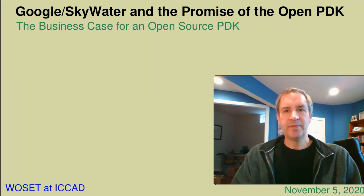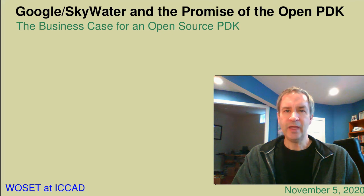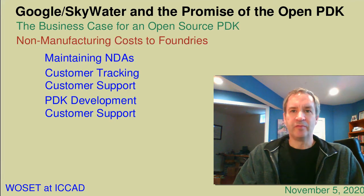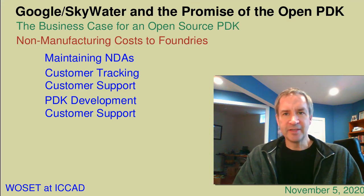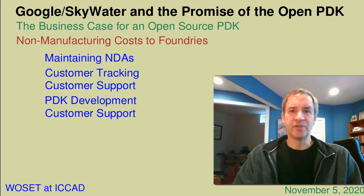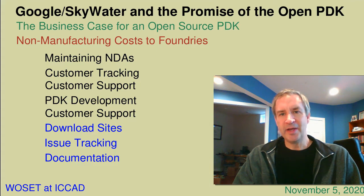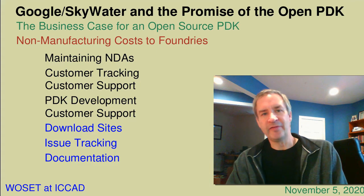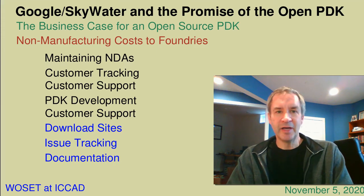But there is a clear business model that recognizes the advantages of making these older and well-established processes public knowledge. Certainly, every PDK represents a large amount of work done by the foundry in refining design rules and characterizing and modeling devices. At some point, though, the problem becomes one of maintaining non-disclosure agreements, tracking customers, providing a large amount of customer support, and maintaining the PDK. Download sites need to be provided and maintained, errors and other issues have to be tracked and fixed, and documentation has to be written and updated.